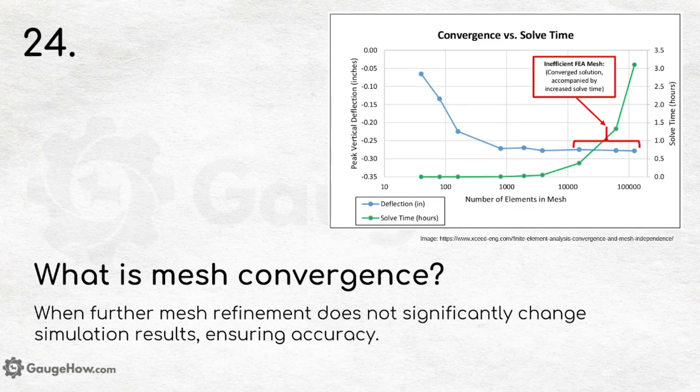What is mesh convergence? Mesh convergence is when further mesh refinement does not significantly change simulation results, ensuring accuracy.